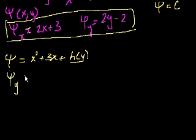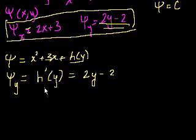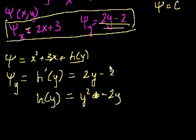Now we take the partial of our xi expression with respect to y. The x-squared and 3x terms contribute 0, leaving h prime of y. We know this must equal our N, which is 2y minus 2. So h prime of y equals 2y minus 2, and integrating gives h of y equals y squared minus 2y. We can absorb any constant of integration into the overall constant later.